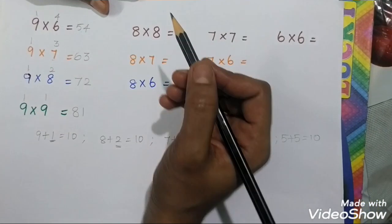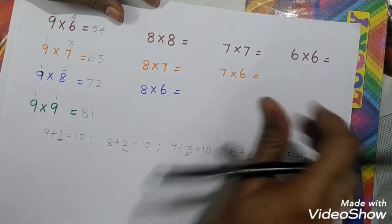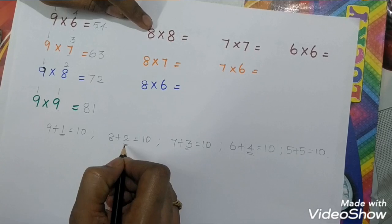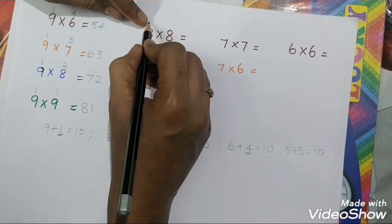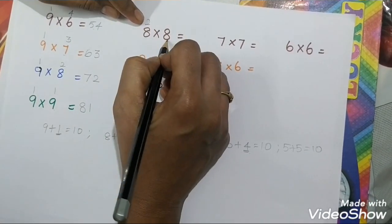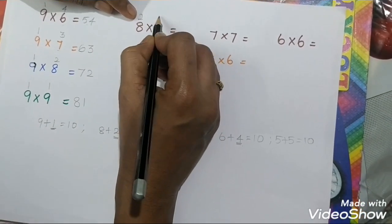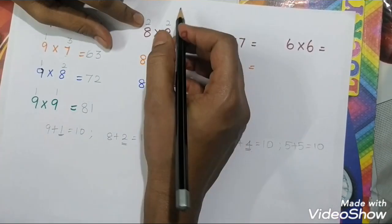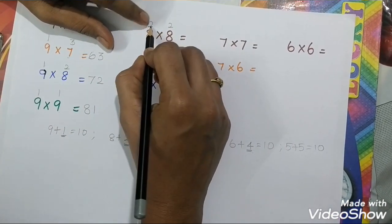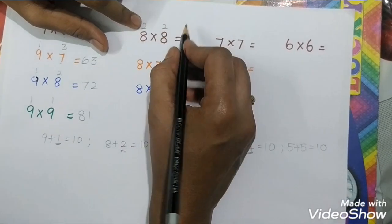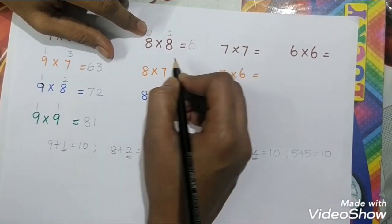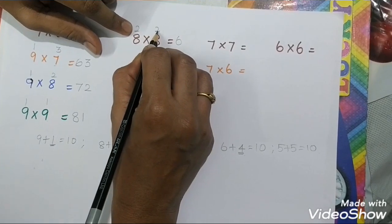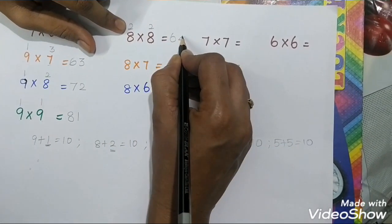Now for 8's table. For 8 times 8: 8's friend is 2. Cross subtraction: 8 subtract 2 equals 6. Multiply the friends: 2 times 2 equals 4. So 8 times 8 are 64.